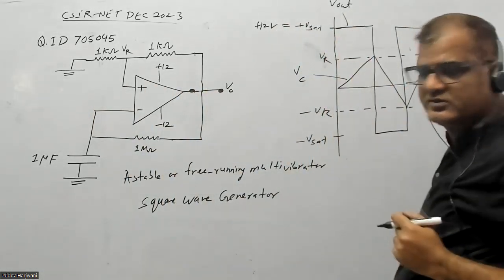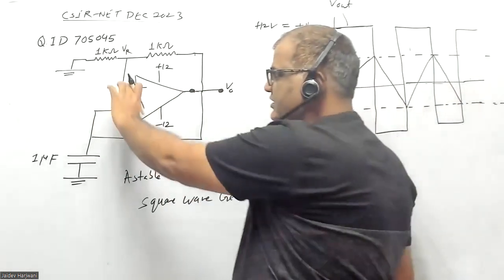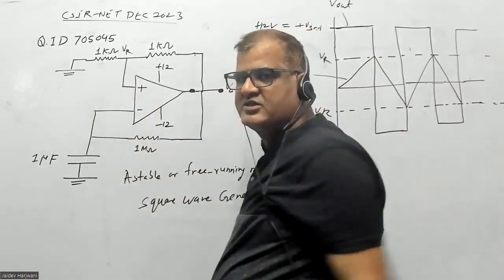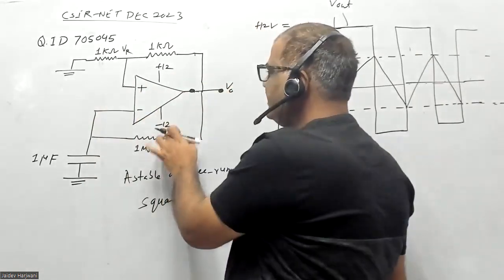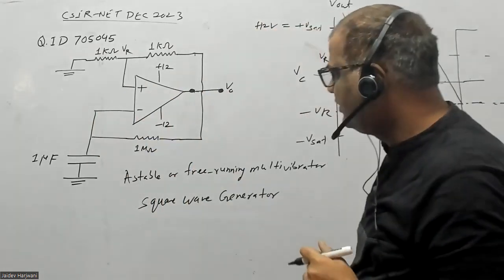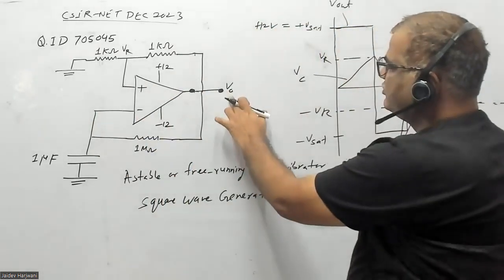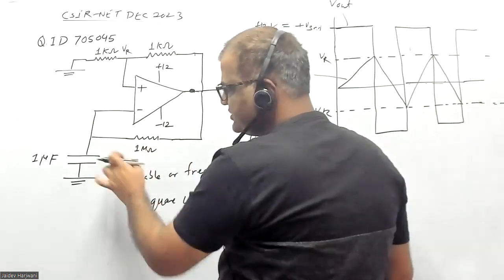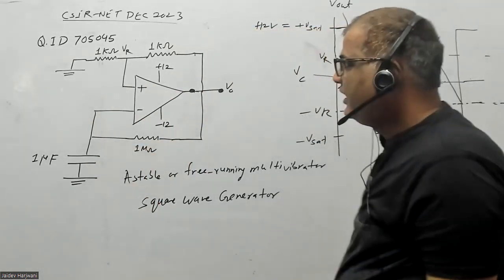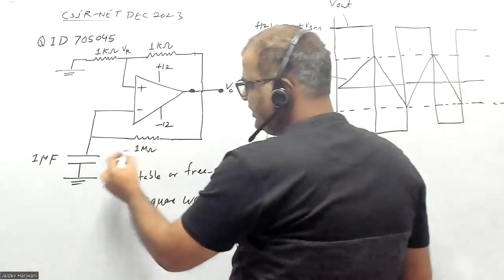Whenever the voltage difference is positive, you'll get here plus V saturation. Whenever the voltage difference is negative, you get minus V saturation. Now once you have a plus V saturation voltage here, this voltage will make this capacitor charge.